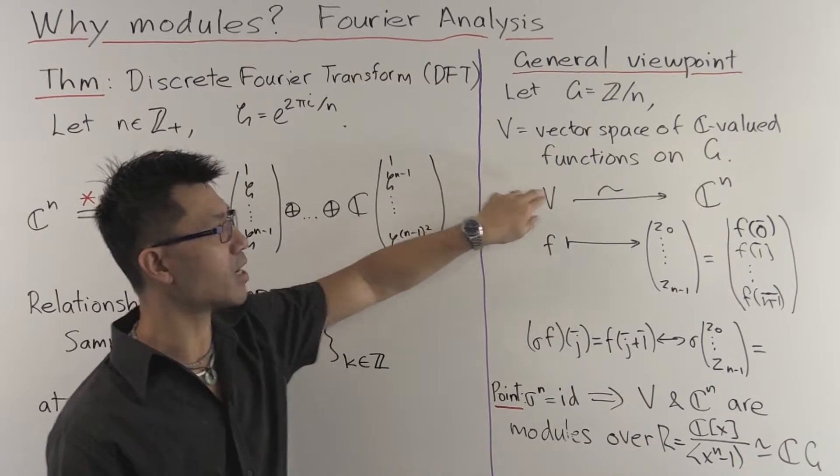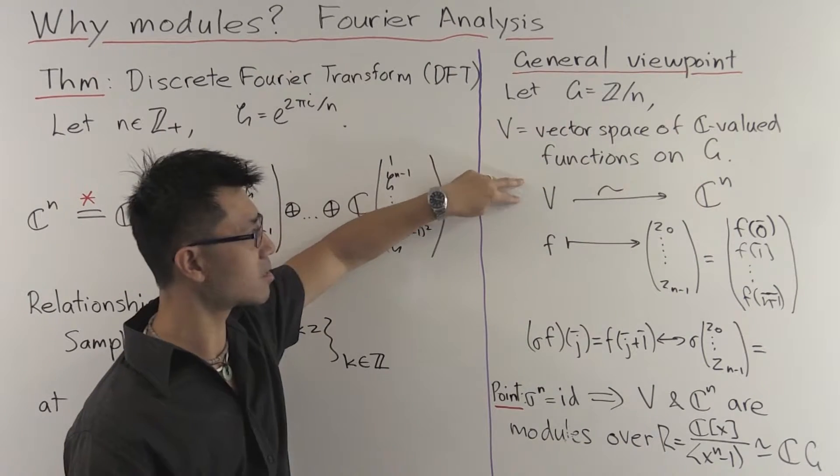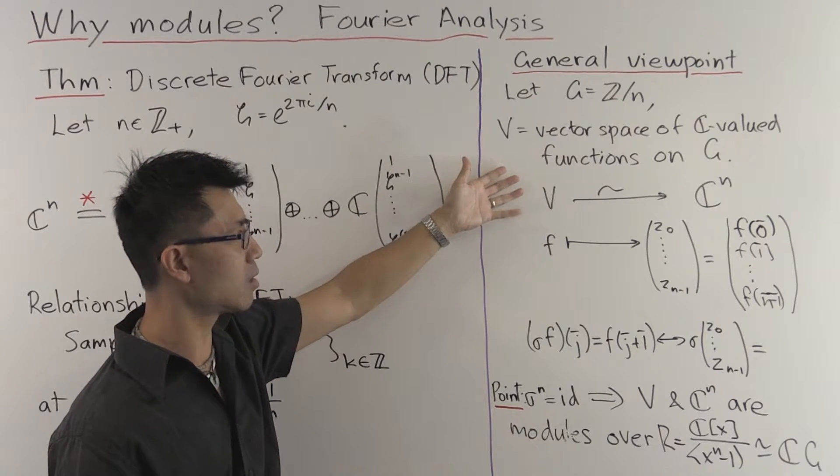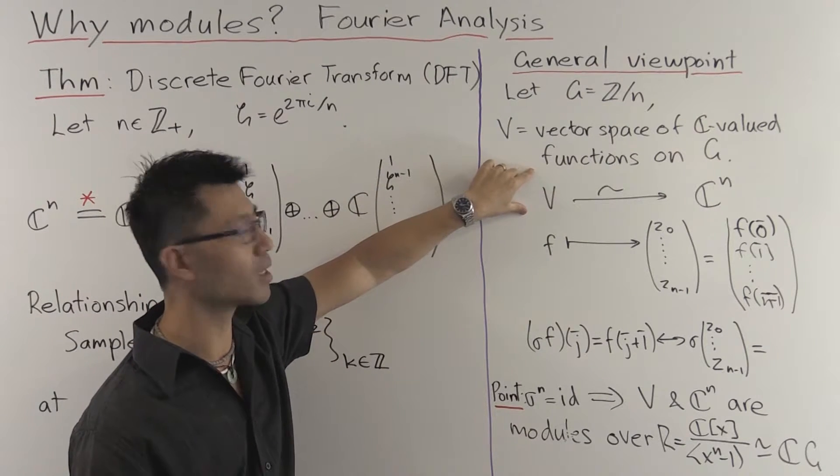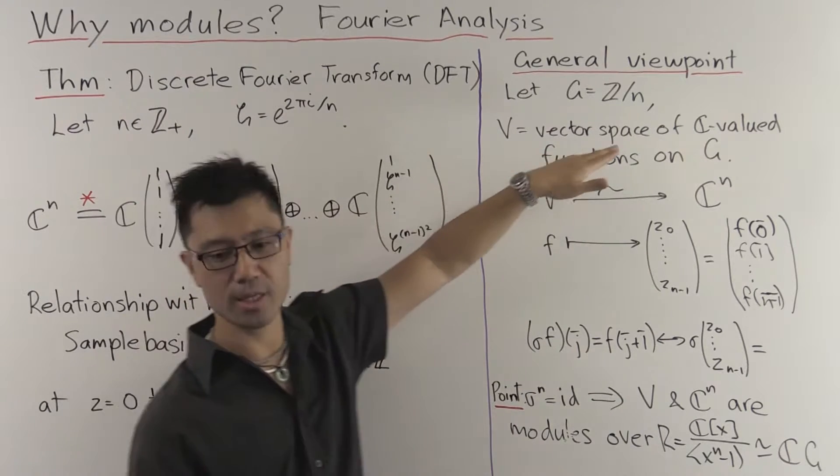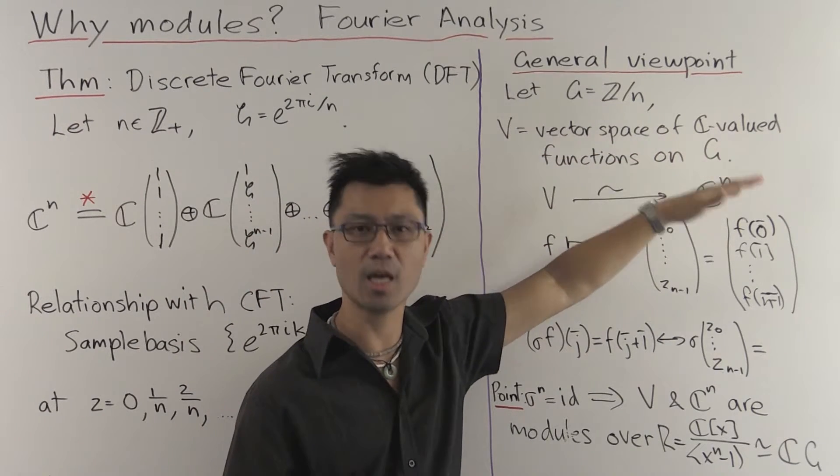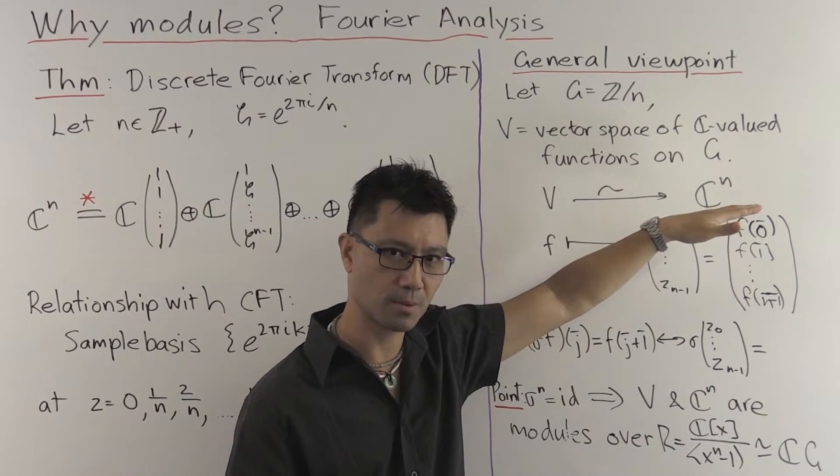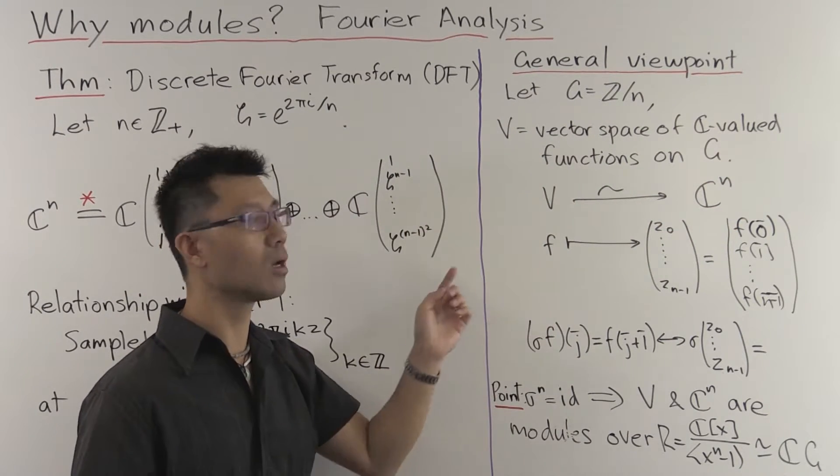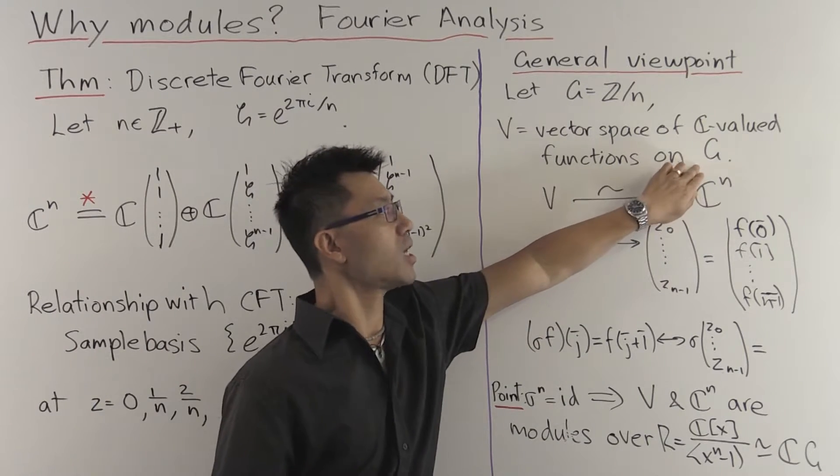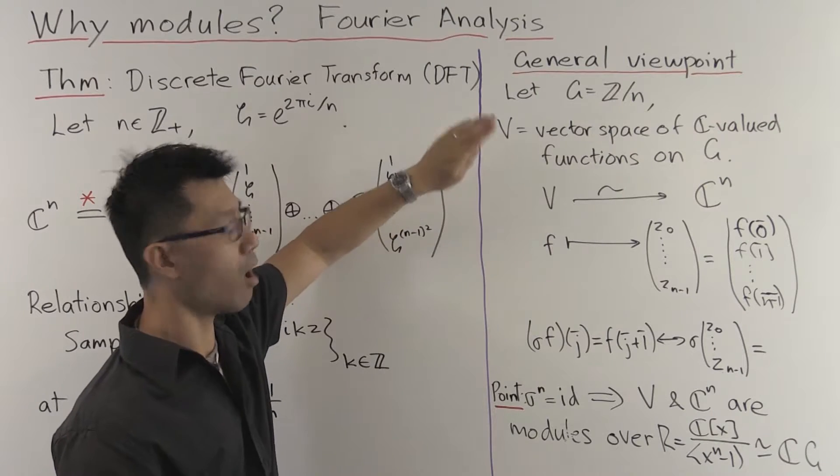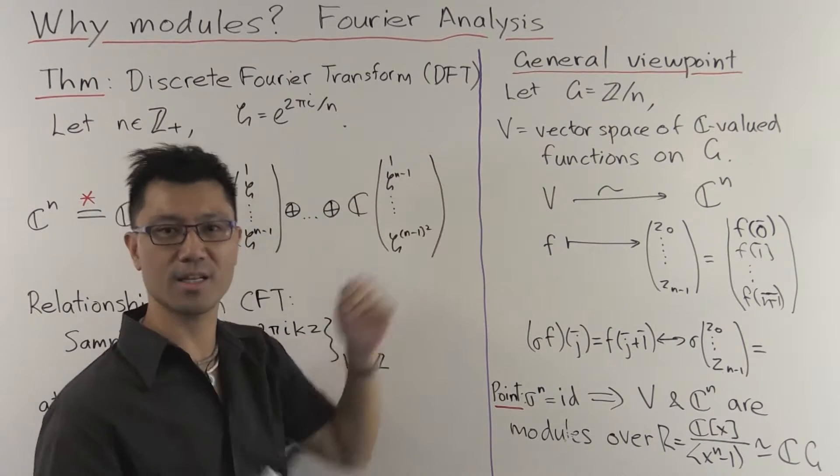So what's the advantage of writing this C^n like this? Well, the point here is that there's a very natural symmetry which plays on this V. In fact, there's a G-symmetry. And why is that? This is just functions on G, and G has a symmetry because it's a group. So in particular, you can translate by elements of the group on G, and that gives you the symmetries on G, and that induces a symmetry on V as well. Let's see how that works.